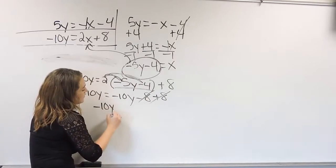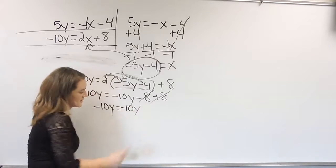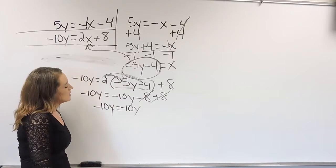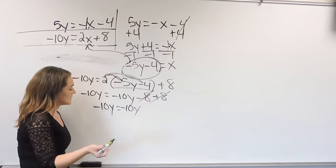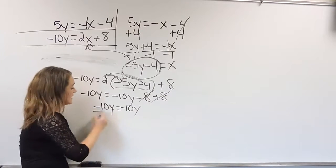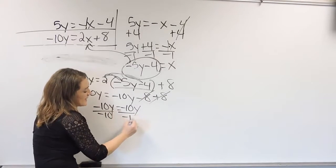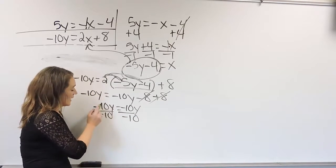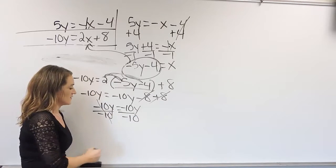Okay, leaving me with negative 10y is equal to negative 10y. Okay. Well, the only thing I can really do here is maybe get rid of the negative 10 and say, hey, I'm going to divide both sides by negative 10. And when I do that,